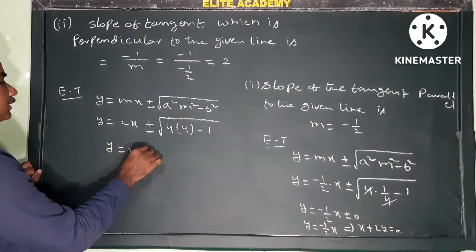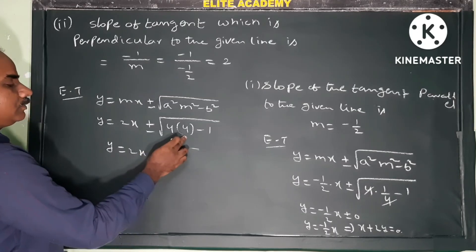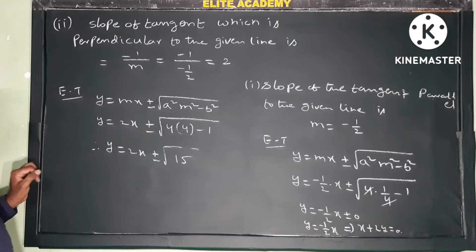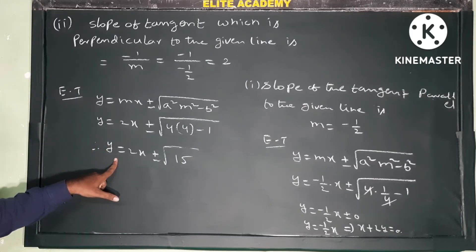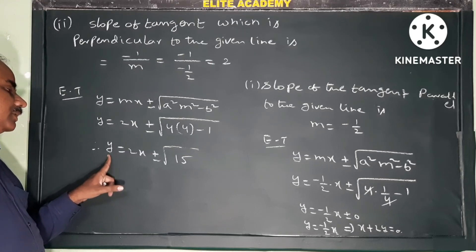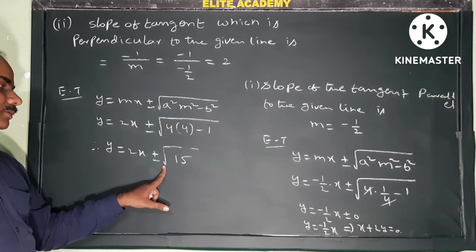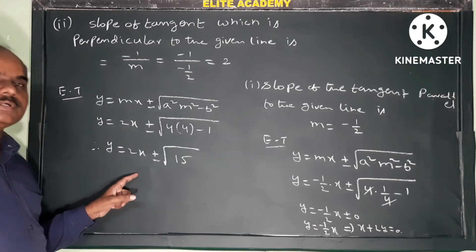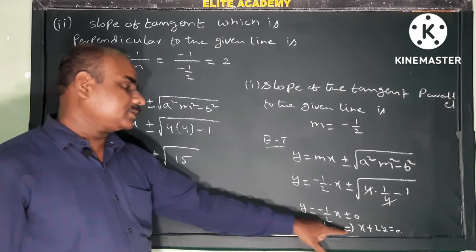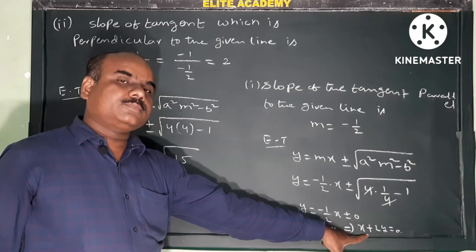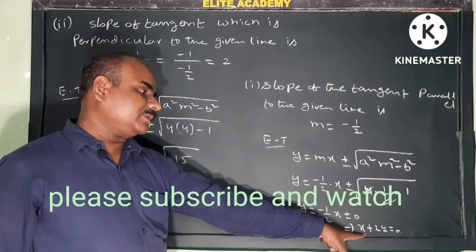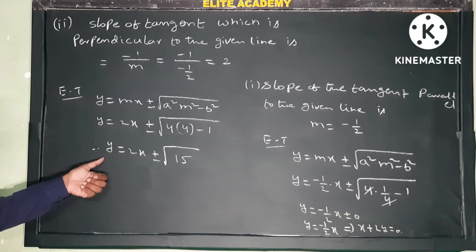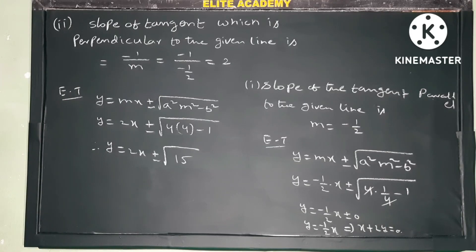Therefore, there is no parallel tangent to the straight line, but the perpendicular tangents are y equals 2x plus or minus root 15.